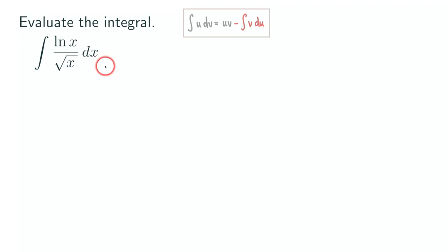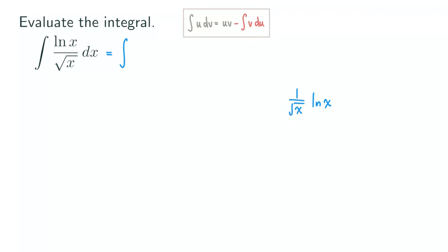So how do we write it? We can write the integral, and let's look at this square root of x. It's actually 1 over the square root of x times ln(x). This square root of x at the bottom can be written in power form as 1 over x to the 1/2, and then times ln(x). If you move it to the top using the rules of exponents and take the reciprocal, that becomes x to the 1/2 times ln(x). So now that becomes a product.